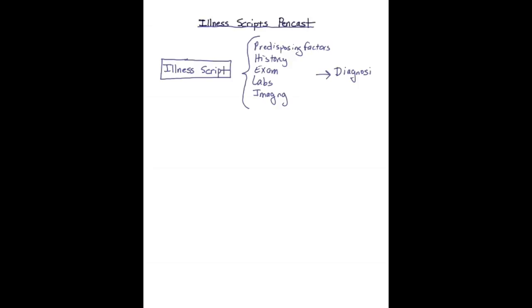Let's use hemophilia A as an example. Predisposing factors would include genetics, as this is an X-linked recessive inherited disorder. As such, you would expect a male patient with possible mention of a family history of maternal family members with a bleeding disorder.